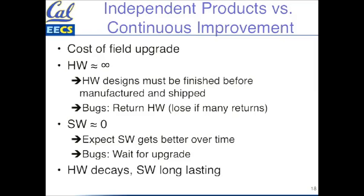The other interesting thing is that because software gets better over time, when you ship a microprocessor you're very excited about it, but the day you ship it it's starting to get less valuable — it decays. After a few years, they're going to throw them all away. You can find the thing you designed in a junkyard within five years. Software can last forever. We found in the book an example of a program that's at least 50 years old but still being used today.